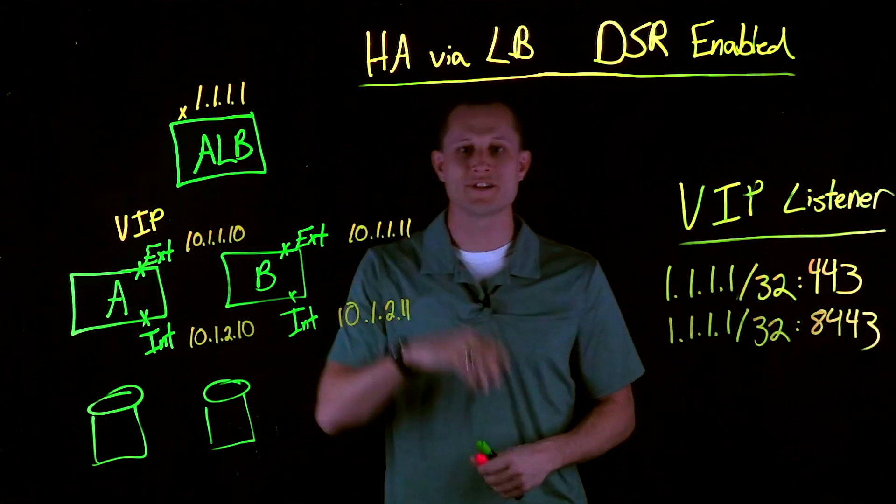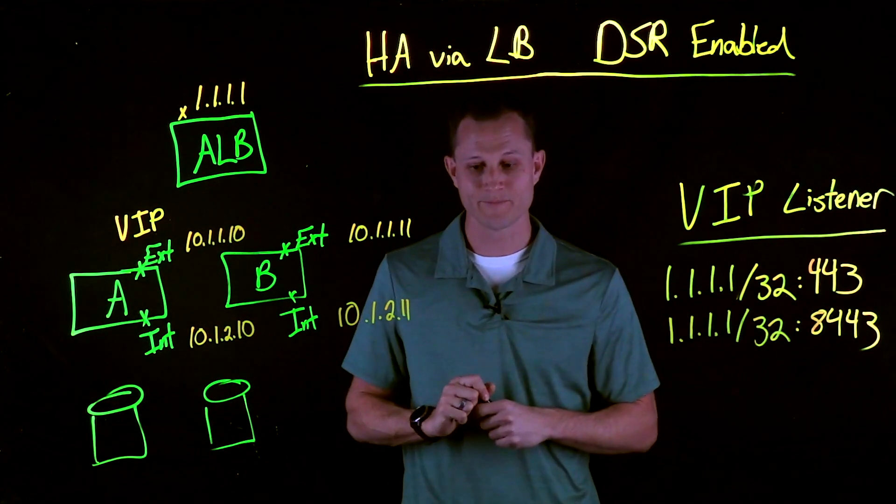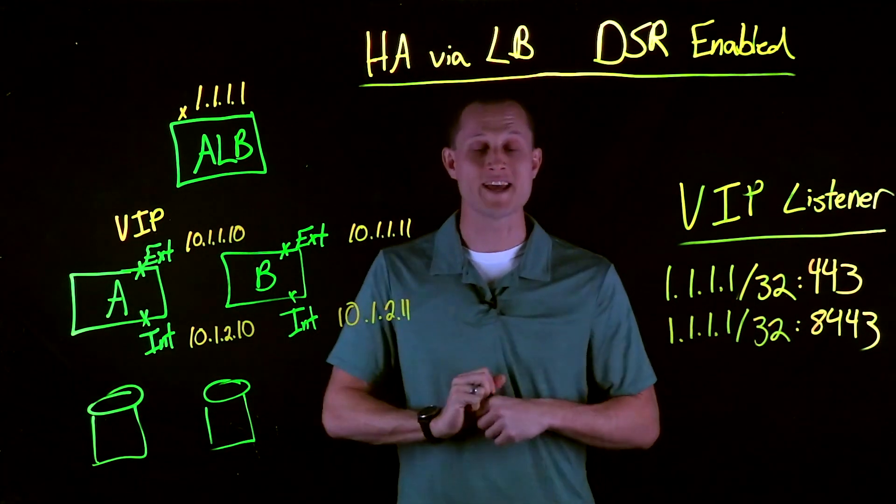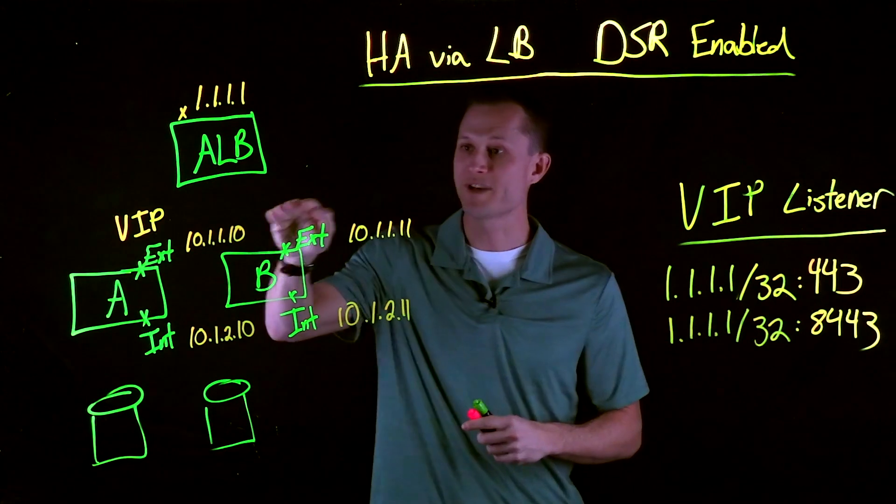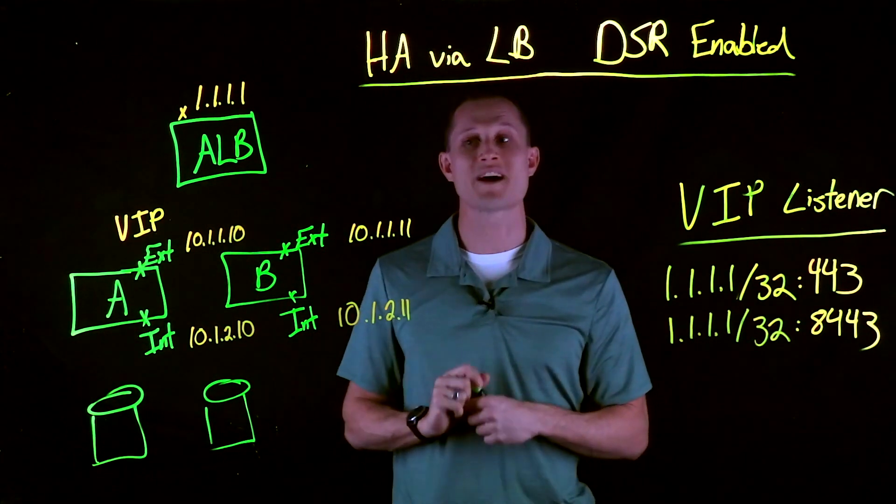In this configuration, SNAT is still required. Otherwise, asymmetrical routing is going to occur. We also have to remember the concept of the backend for the ALB. In previous videos, we had talked about how the ALB talks to secondary IPs on the F5. In the DSR-enabled scenario, that's not a requirement.